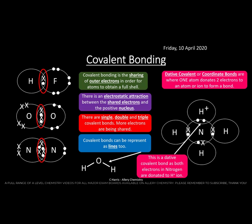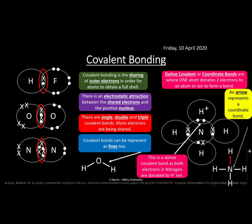Both electrons in this bond come from the ammonia. The resulting ion, NH₄⁺ (ammonium), is positively charged and can form ionic bonds with another ion — for example, ammonium chloride is NH₄⁺ Cl⁻. A dative covalent or coordinate bond is normally represented with an arrow showing the direction in which the electrons are being donated.